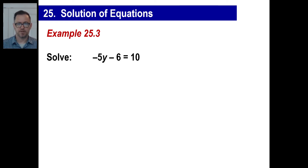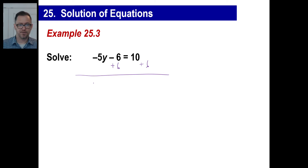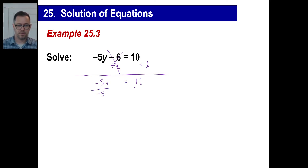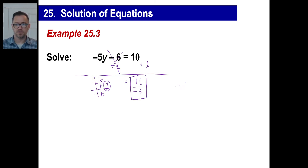Let's try another one. We're going to get rid of the negative 6 by adding 6, then add 6 over here too. Negative 5y is the only thing left; that takes the constant to 0. 10 plus 6 is 16. The last thing is divide by negative 5. You get y equals 16 over negative 5. A positive divided by a negative is a negative, so the answer is negative 16 over 5.